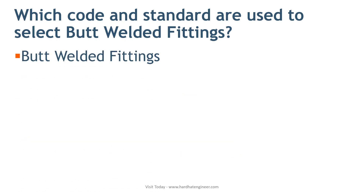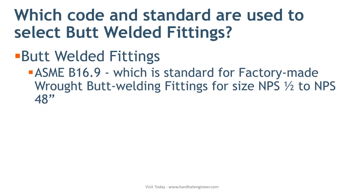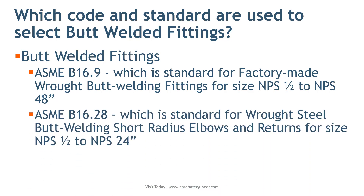Butt welded fittings, also known as wrought products: dimensions and list of materials used to manufacture wrought fittings are covered in ASME B16.9, the standard for wrought steel butt welded fittings for sizes NPS 1.5 inch to NPS 48 inch, and ASME B16.28, the standard for wrought steel butt welded short radius elbows and returns for sizes NPS 1.5 inch to NPS 24 inch.